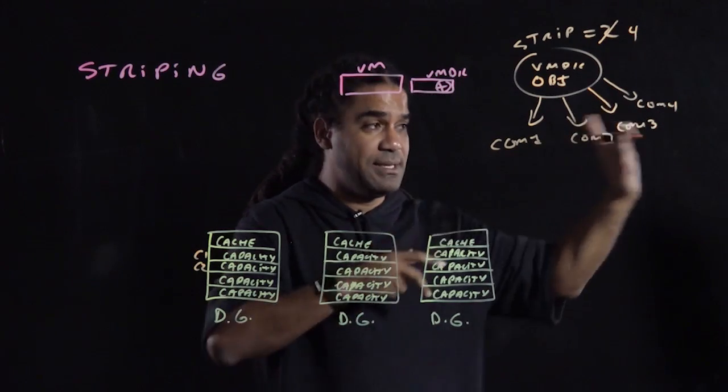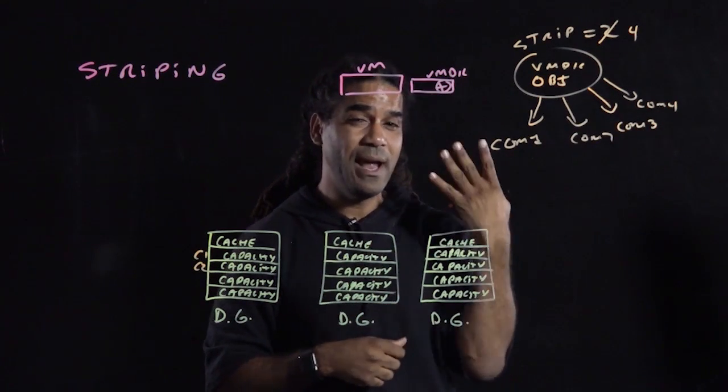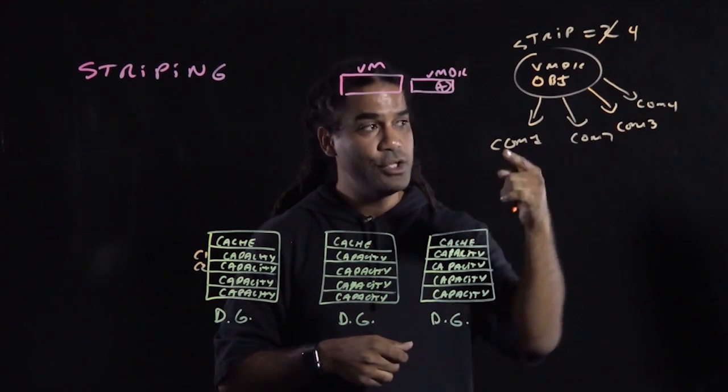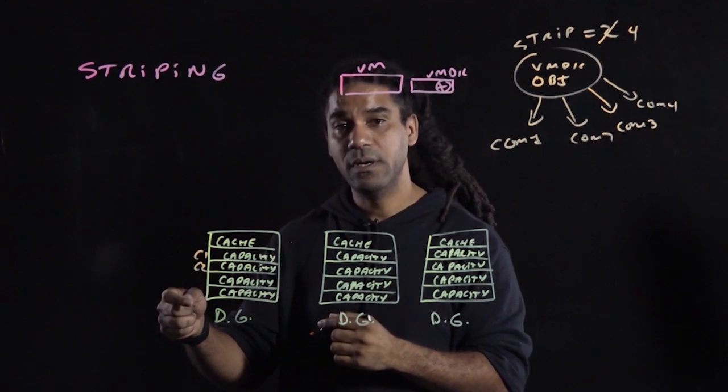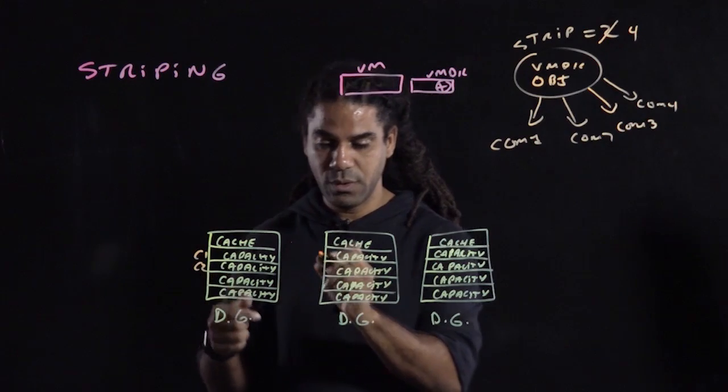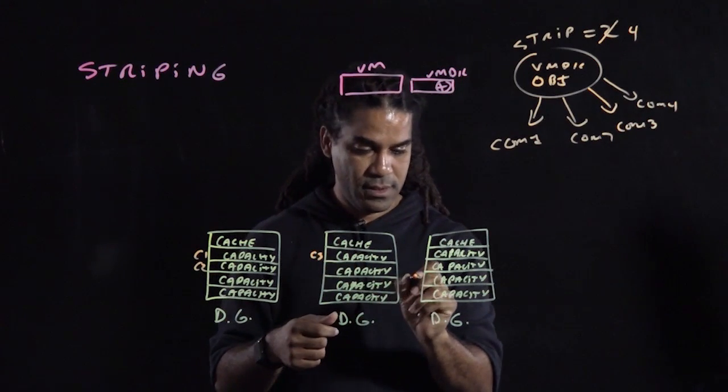So once you have the components divided up like this, vSAN goes, okay, I need to find four capacity disks to place all those four components. I could put them on one, two, three, four, or I can do component 1, component 2, component 3, and component 4.